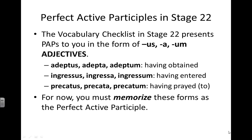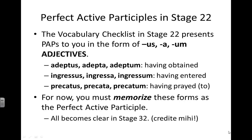For now, you must memorize these as perfect active participles, and everything will become clear in Stage 32 — omnes credite mihi.